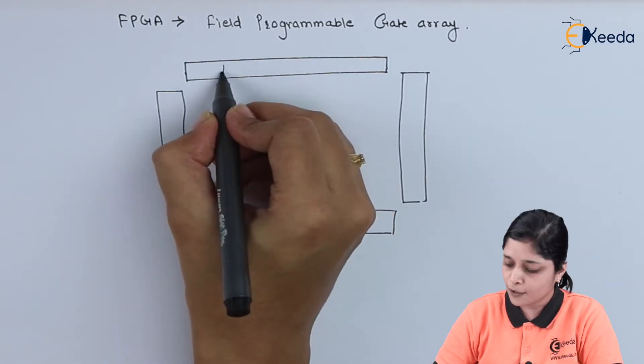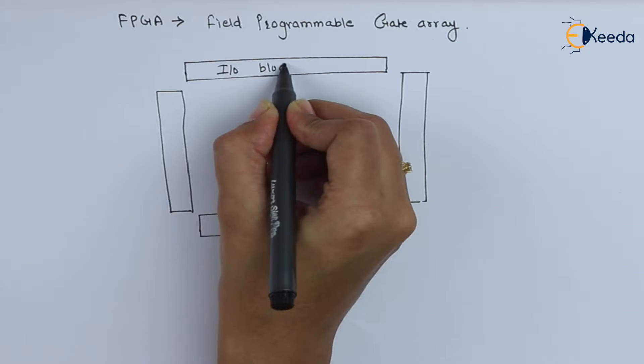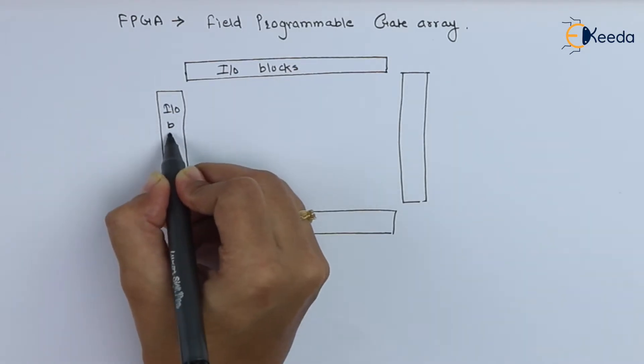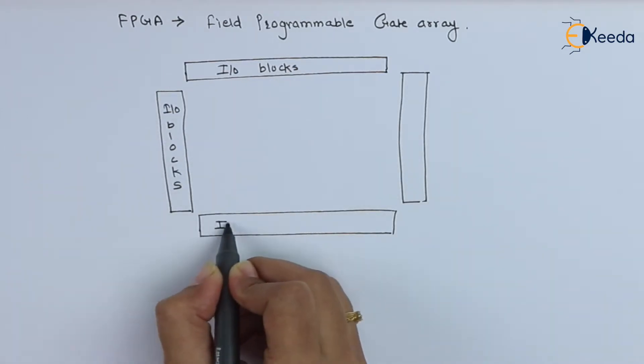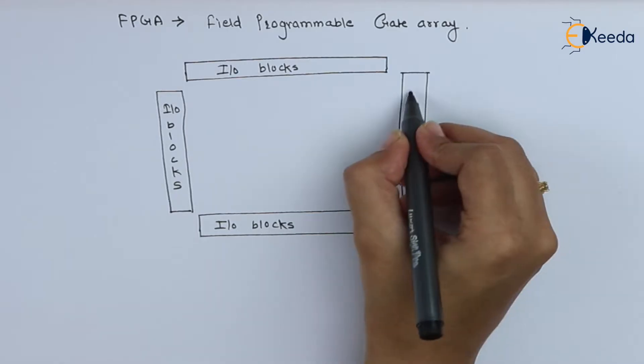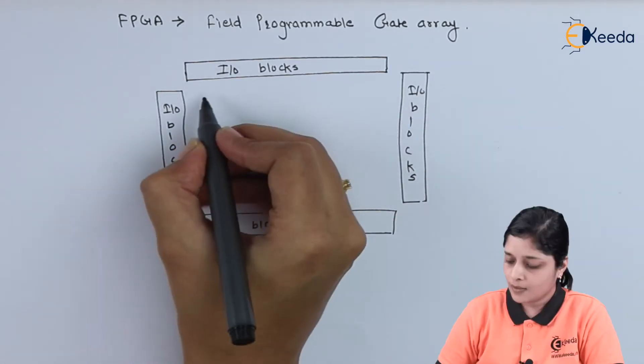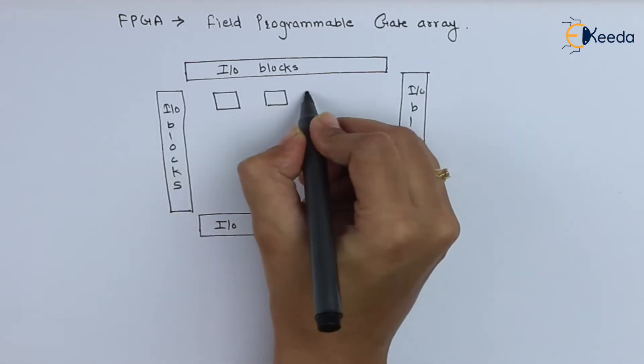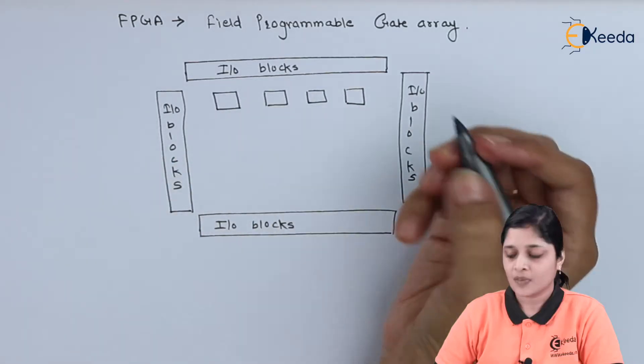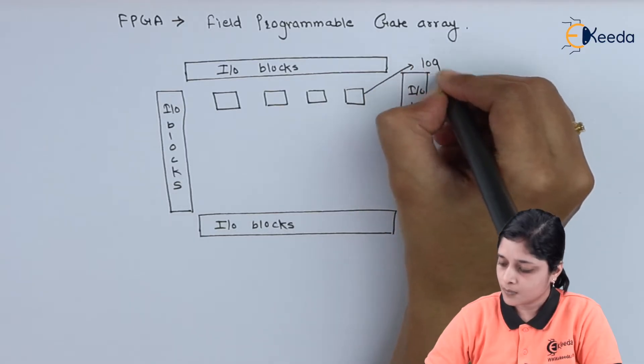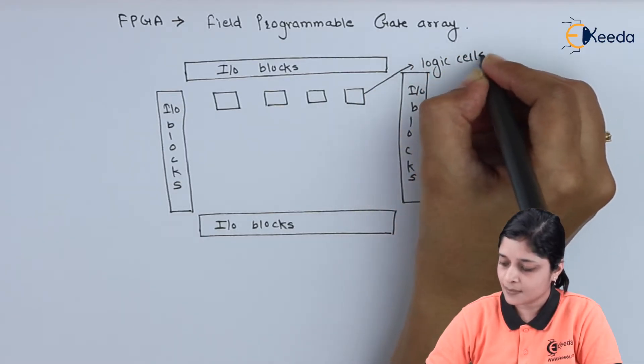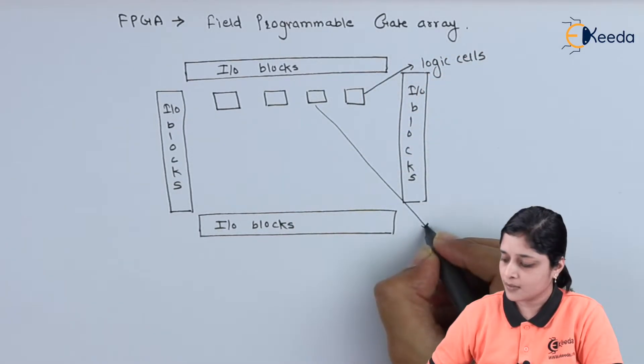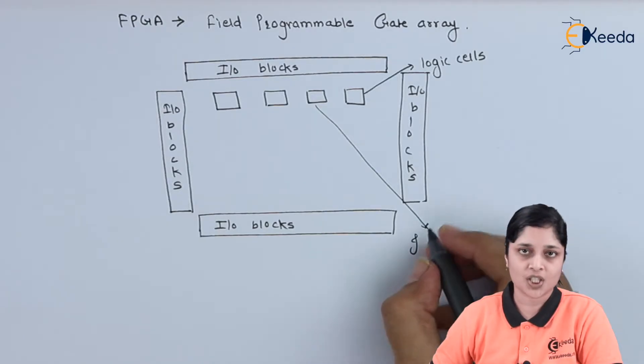All these are the IO blocks, and inside the IO blocks there are logic cells and interconnecting switches.